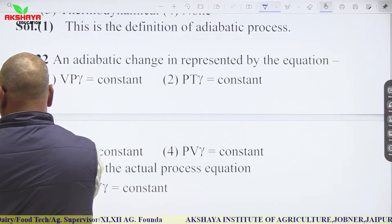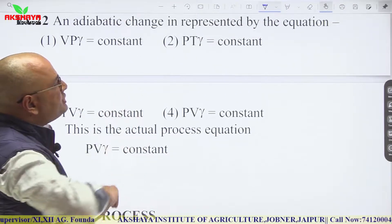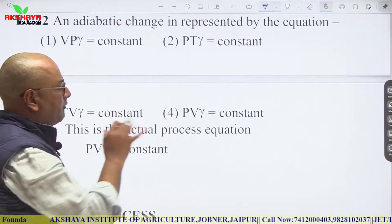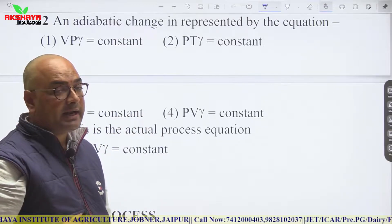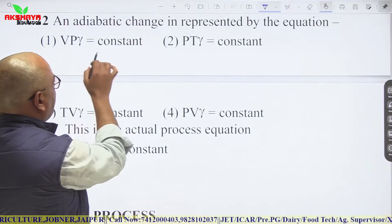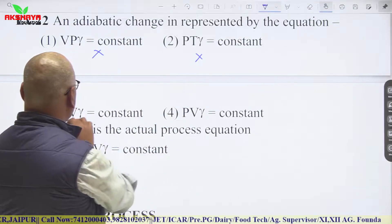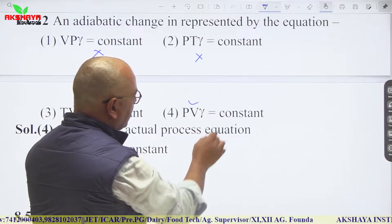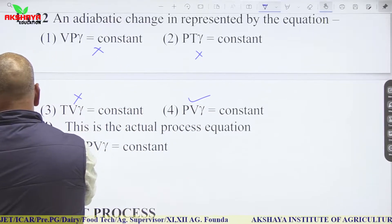An adiabatic change is represented by which equation? From the given options: V·P^γ is incorrect; P·T^γ is incorrect; P·V^γ (wrong form) is incorrect. The correct equation is P·V^γ = constant. This is the correct equation for an adiabatic process.